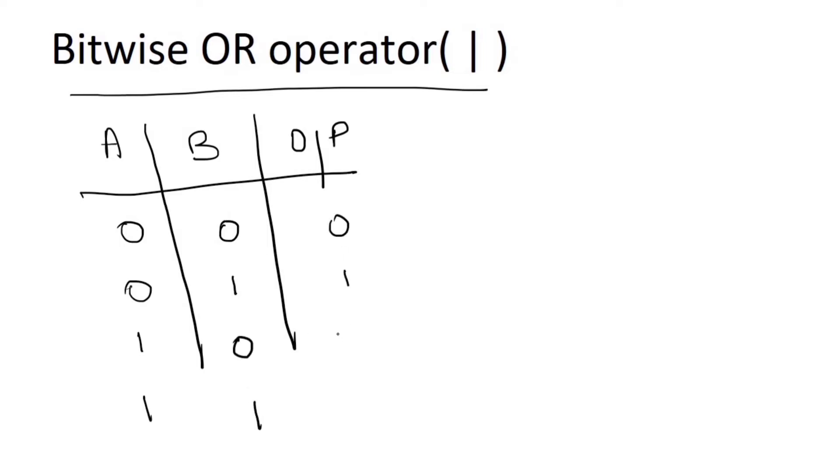If any one of the inputs is 1, then the output is always 1. In this case where both inputs are 0, the output is 0, and the rest are all 1.